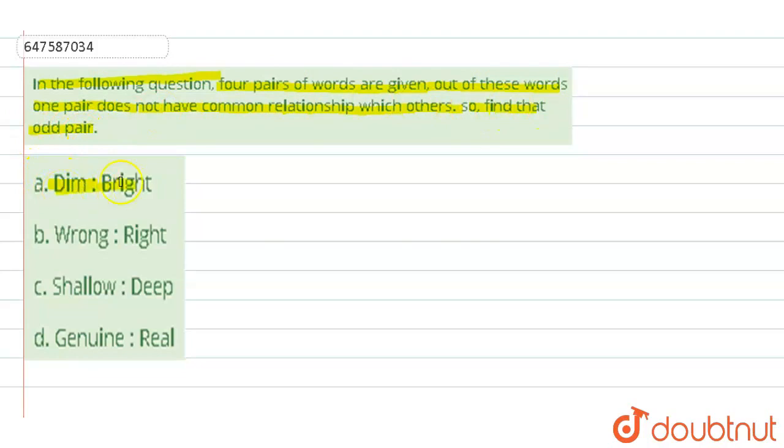And we have dim and bright, wrong and right, shallow and deep, genuine and real. So these are four pairs, they have to be related, and in which there is a relation match, our odd one has to be found.